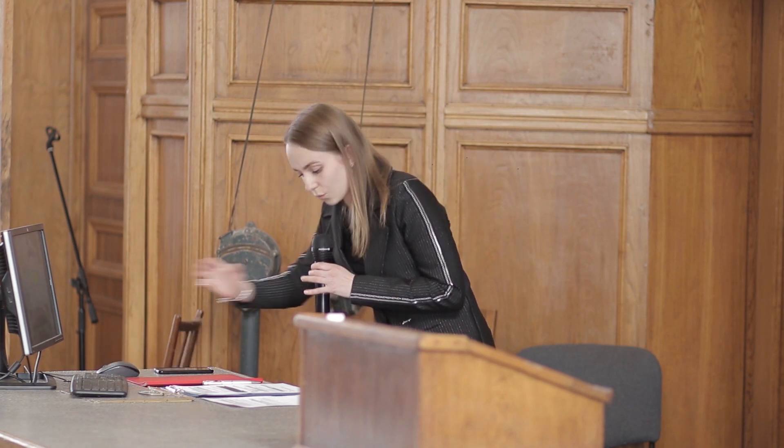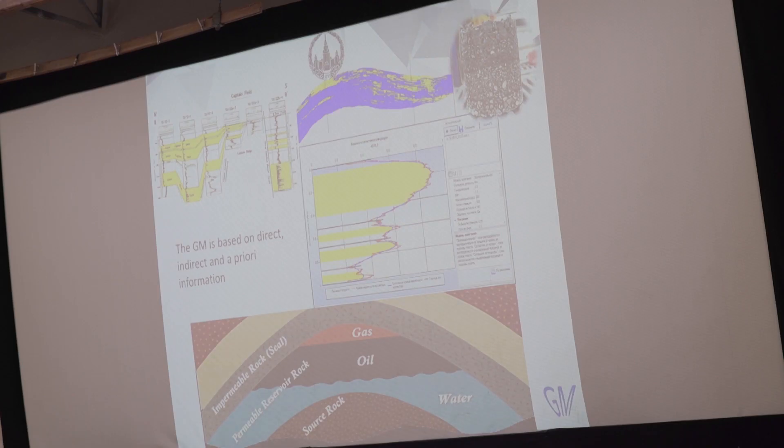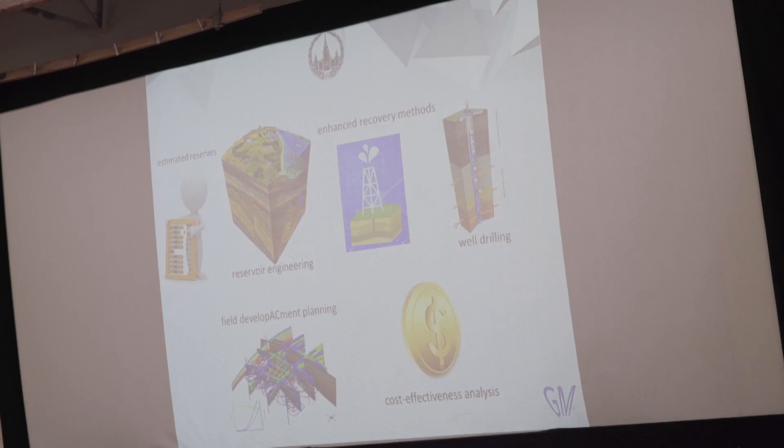The main research method in Geology is empirical — it is a direct study of the result. Geological Modeling is based on direct and a priori information. Direct information on the structure and properties of the reservoir is obtained from well data, including study of core. The idea of the cross-well part of the field can be built only on the basis of sedimentation and stratigraphy. We can build well correlations and use sequence stratigraphy. Computer modeling technologies are widely used in all areas of petroleum production: resource estimation, reservoir engineering, enhanced recovery methods, drilling, field development planning, and cost-effectiveness analysis.